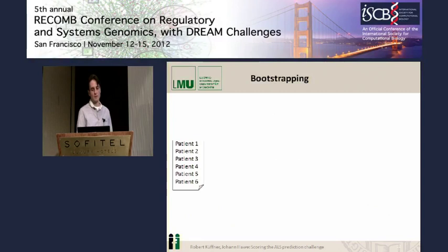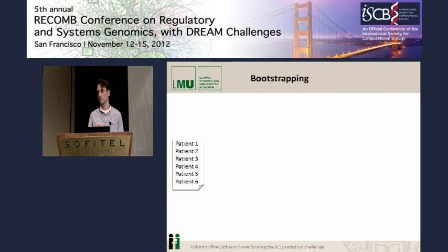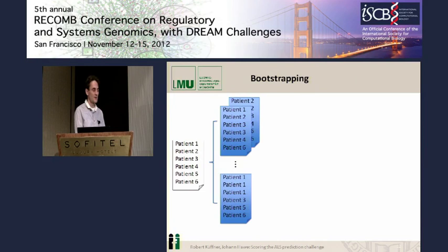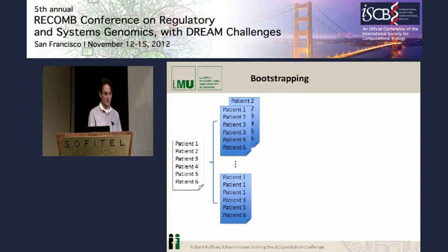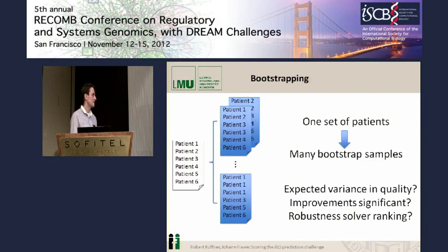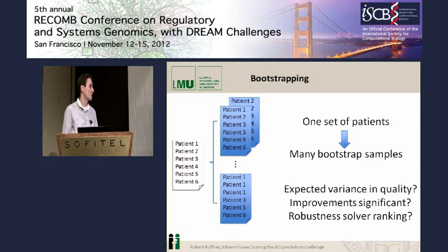We now have a single RMSD or Pearson correlation value for each method. We apply bootstrapping to mix these patients, where the bootstrapping sometimes takes patients several times and other patients are not in the set. From one RMSD we can compute RMSDs for all these bootstrap sets, and thereby answer questions like: what is the expected variance in quality, are certain improvements significant, and how robust is the ranking of the solvers?